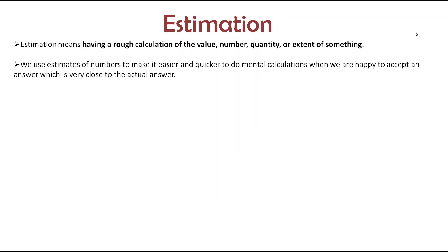First, we will look at the definition of estimation. Estimation means having a rough calculation of the value, number, quantity, or extent of something. We use estimates of numbers to make it easier and quicker to do mental calculations when we are happy to accept an answer which is very close to the actual answer. Whenever we have to tell the number of something and we don't know the exact value, we give the rough number — the closer number. That number is called the estimated number.